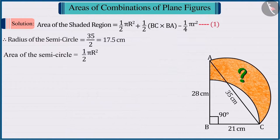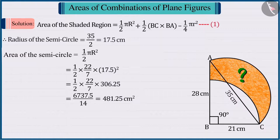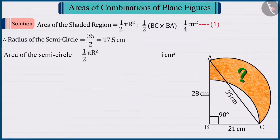Substituting the value of the radius in the formula for calculating the area of a semicircle and solving, the area of the semicircle is obtained as 481.25 cm².